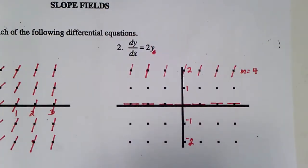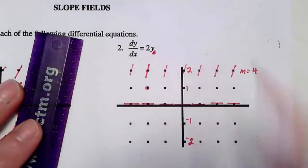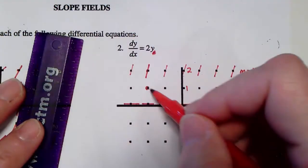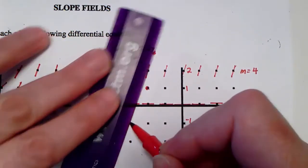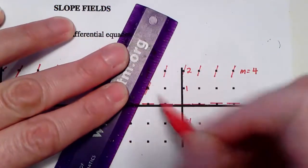Now when y equals 1, I have a slope of 2. Once again, I'm going to use that as my starting point right here in the second quadrant. So if I line up my straight edge so I can go down 2 to the left 1, so there's my slope of 2.